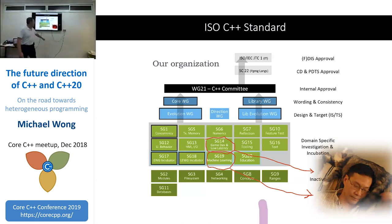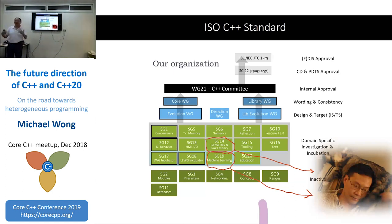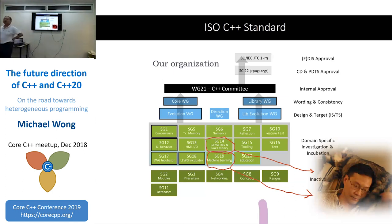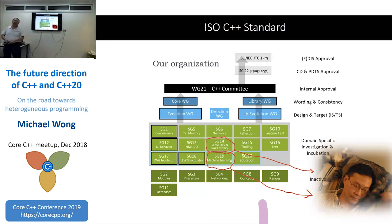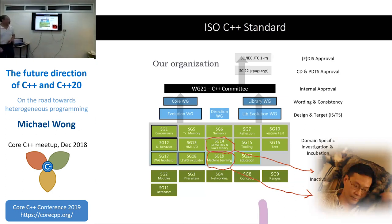Embedded has always been about low latency. The SG5 transactional memory group — I resigned from SG5 and handed it to Hans Boehm. We produced a TS, but the feedback told us it wasn't right. Virtually nobody wanted to implement it; GCC had most of it implemented before the TS anyway. What's also happened in industry is that most hardware vendors are slowly backing off from transactional memory — IBM backed it off from their Power system, Intel no longer has it in Xeon Phi.